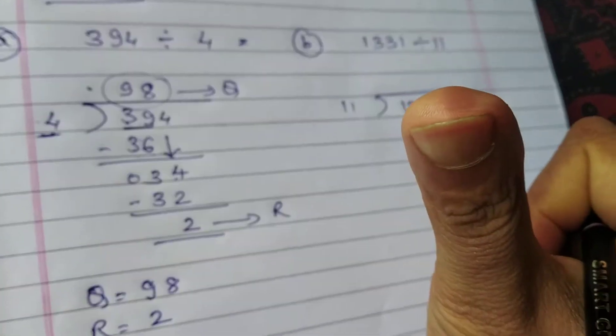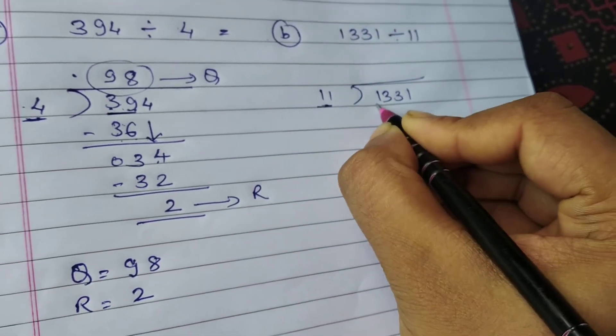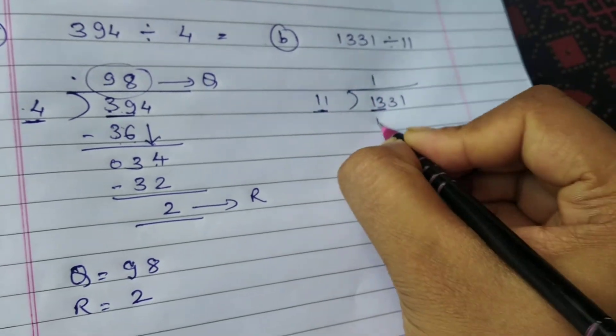Now 11 ones are 11. 11, 2 digit hai na, toh 1 digit se start nahi karna hai. 2 digit so you are going to start with 2 digit. So 11 ones are 11.